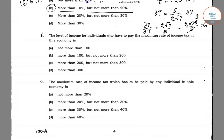Now coming to question number 8. In question number 8, it is asked: what is the level of income for individuals who have to pay the maximum rate of income tax in the economy — that is, the income level at which individuals are paying the maximum taxes.